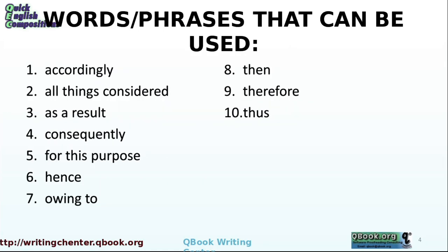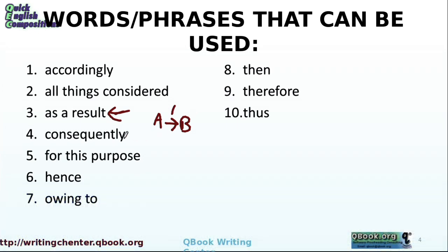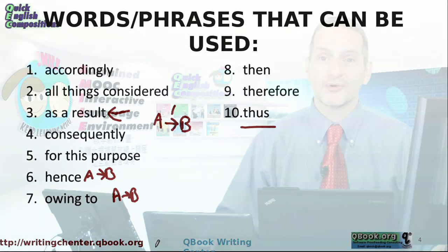Some common phrases and words used in this type of essay are: accordingly, all things considered, as a result — that's a really common one, because you say A leads to B and this thing here is 'as a result of' — consequently, for this purpose, hence — A hence B — owing to, then, therefore, and thus. People love to use 'thus' because it signals that A leads to B very clearly, with no confusion.